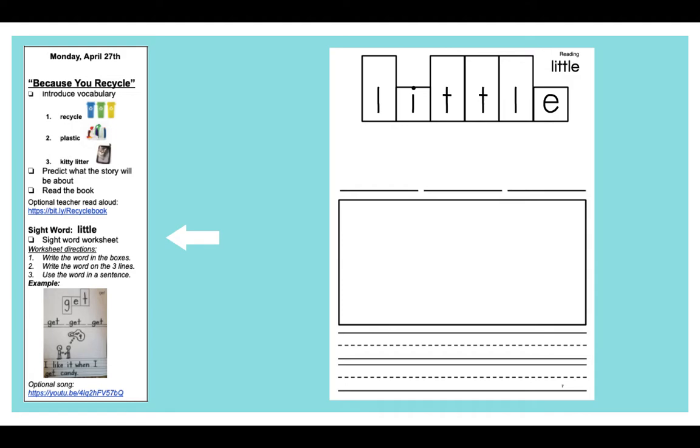L is a tall letter. I is a short letter. T, T, and L are all tall letters. And the E at the end is a short letter. So first we're going to write those letters in the boxes. Then we're going to write the word little three times on the lines. At the bottom you're going to draw a picture and write a sentence using the word little. I bet you can come up with something really cool for that. Remember there's also an optional song if you want to follow this link to talk about the word little.